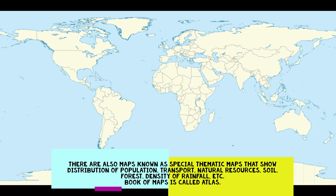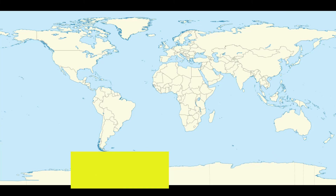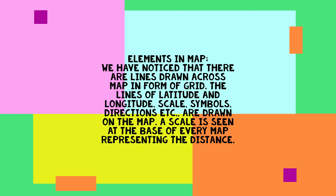As we know, a map is a miniature or small representation of the Earth. The exact distance between two places cannot be shown. Therefore, maps are drawn to a scale, which indicates the relationship between the distance shown on the map and the actual distance between those two places.